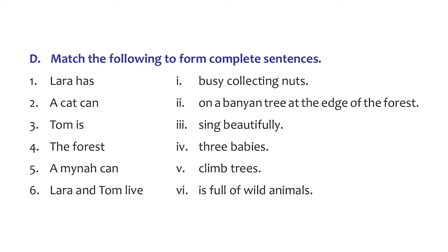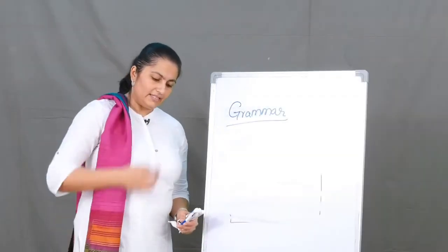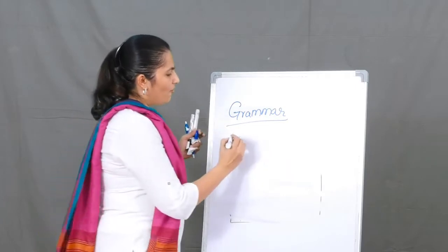Let's take an example: 'Lara has…' — 'Lara has busy collecting nuts' — that doesn't make sense. 'Lara has sing beautifully' — that doesn't make sense either. 'Lara has three babies' — well, that sounds like a complete sentence! In the same manner you can look at the others and match the following. The idea is to help you make complete sentences. The next topic is verbs.